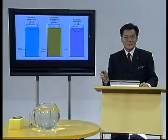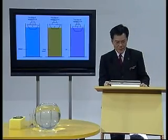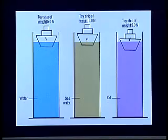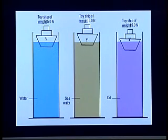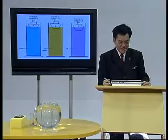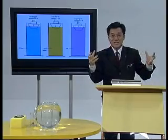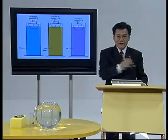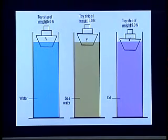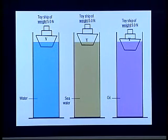Let us take a look at the question. Have a good look at this diagram. You have one particular toy ship — or rather three of them, the same kind. Each one has a weight of 5 newtons. These toy ships float on three different jars with three different kinds of liquid. The first one is tap water, the second is sea water, and lastly, oil.